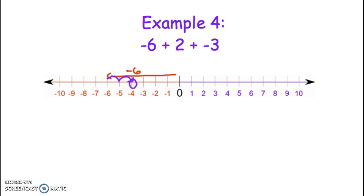Now the last number tells me to add negative 3, which is going to be moving 3 spaces to the left. So I'm going to go 1, 2, 3 spaces to the left. And notice I finish on negative 7. That means negative 6 plus 2 plus negative 3 is negative 7.